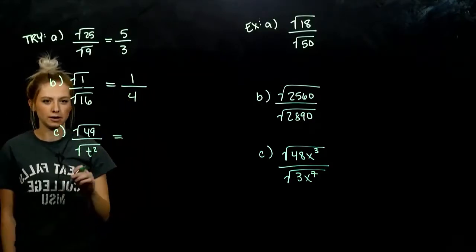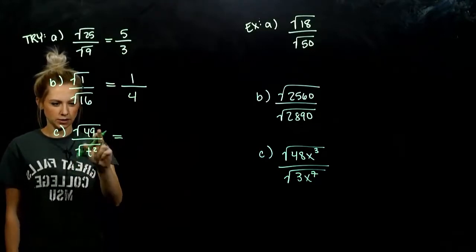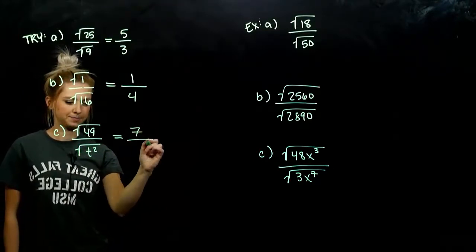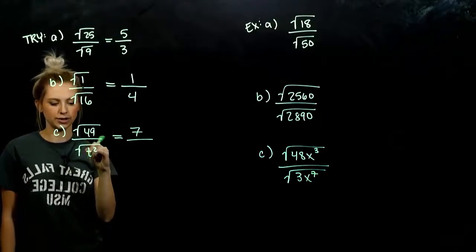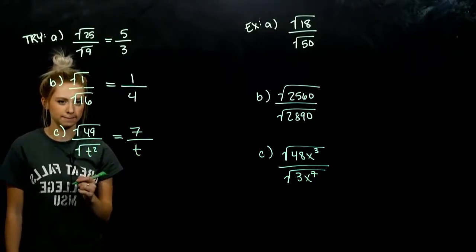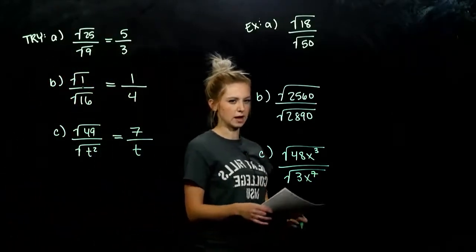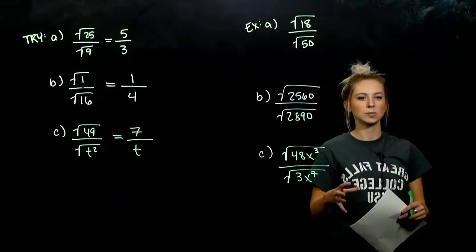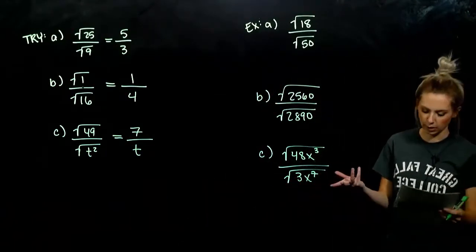And down here, again, we can evaluate individually. Square root of 49 is 7. Square root of t squared. They're undoing each other. We're left with t. So we got a handle on that. We can either combine them, if it helps us, or we can split it up, if it helps us.